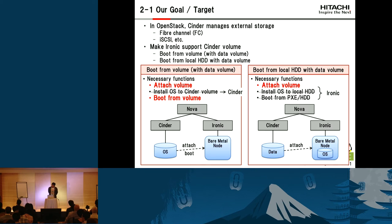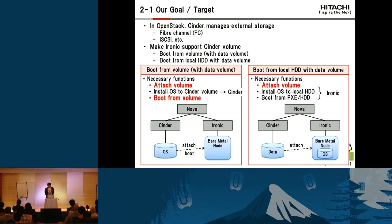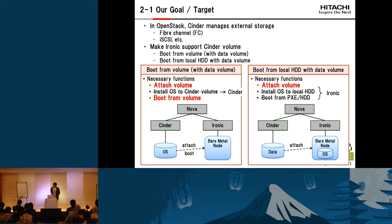Fortunately, Cinder and Ironic already support some functions. For example, installing the operating system to a Cinder volume is already supported by Cinder. Similarly, installing the OS to a local hard disk or setting up the node to boot from PXE or hard disk is already supported by Ironic. So to make Ironic support Cinder volumes, we need the following two functions: attaching a volume, and configuring the bare metal node to boot from that volume. Attaching a volume is common in both cases.